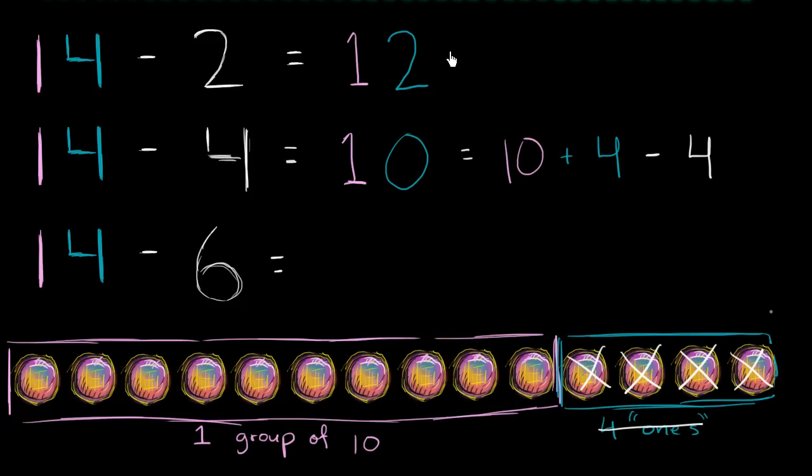We can do the same thing up here. This is equal to 14, which is 10 plus 4. And then we subtracted 2. So what you're going to be left with is 10 plus—what's 4 minus 2? It's 2. So that's what we got right over here. Let me make this very clear. This simplifies to 2, this 2 right over here. This simplifies to 0, this 0 right over here.